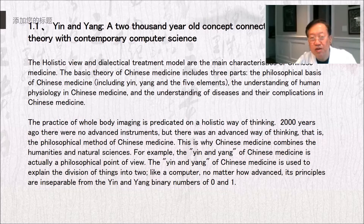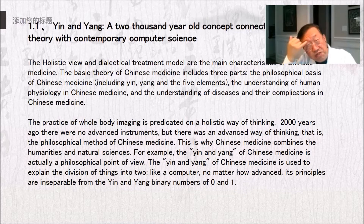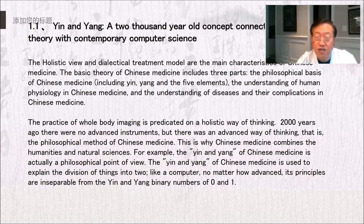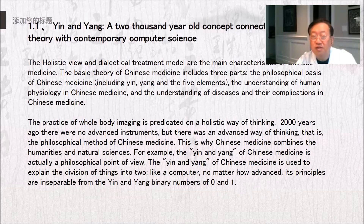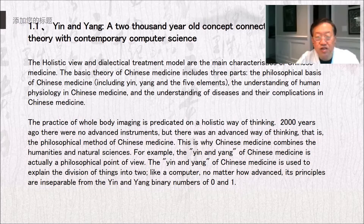The practice of whole body imaging is predicated on a holistic way of thinking. 2,000 years ago, there were no advanced instruments, but there was an advanced way of thinking — the philosophical method of Chinese medicine. This is why Chinese medicine combines the humanities and natural sciences. The yin and yang of Chinese medicine is used to explain the division of things into two, like a computer. No matter how advanced, its principles are inseparable from the yin and yang binary numbers of 0 and 1.